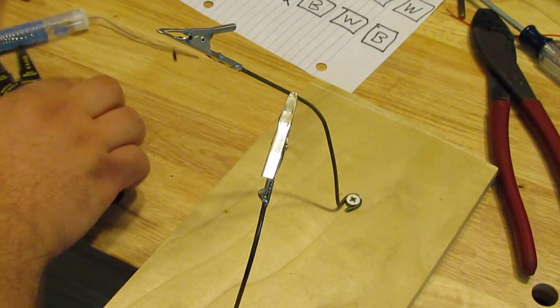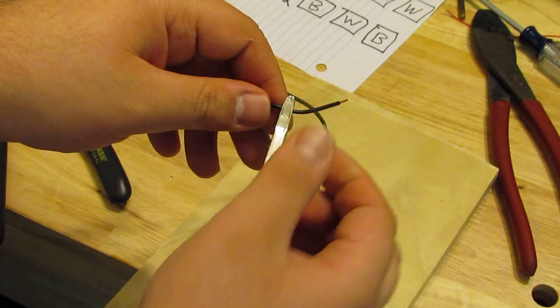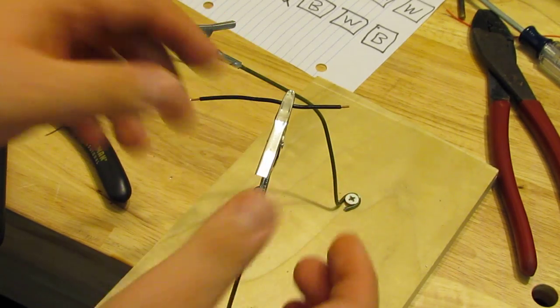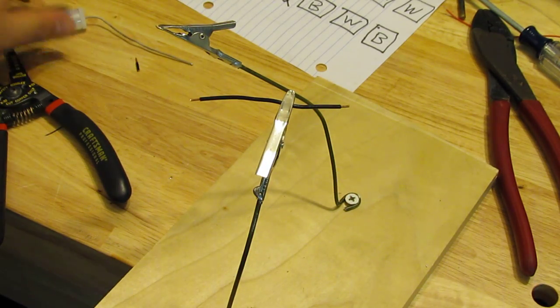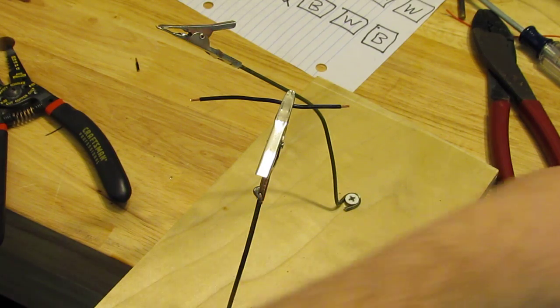Now you're going to place it on your alligator clip. That way you have both hands free to hold your flux wire and your soldering iron.